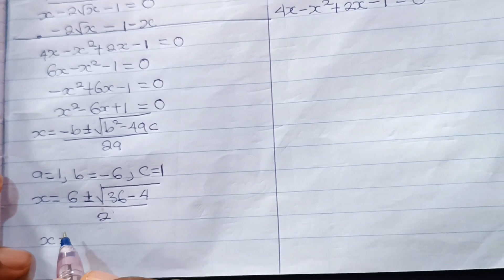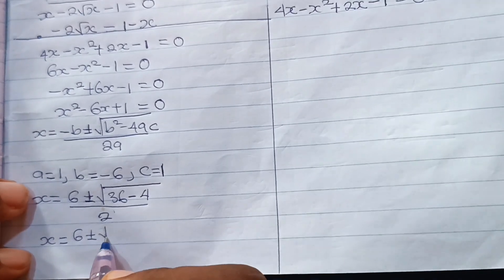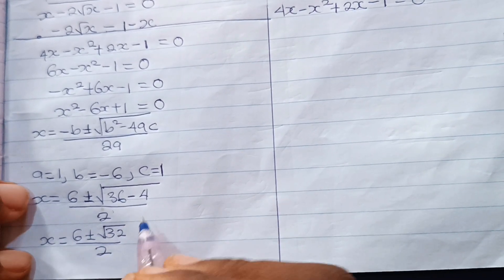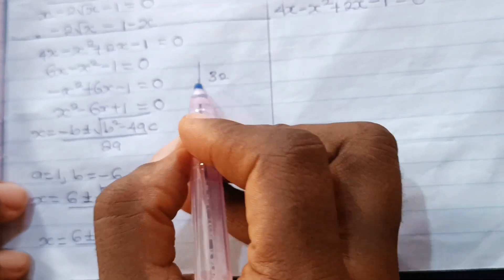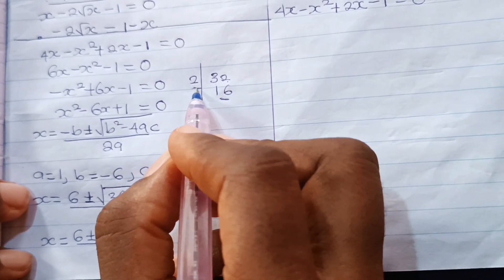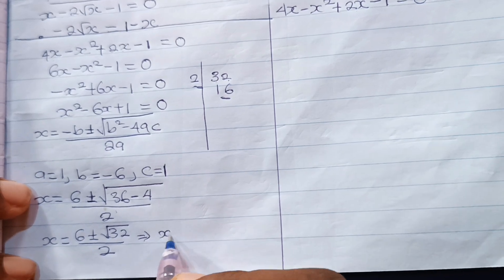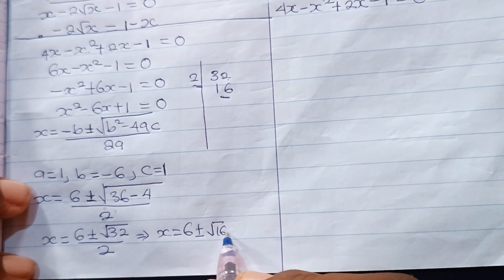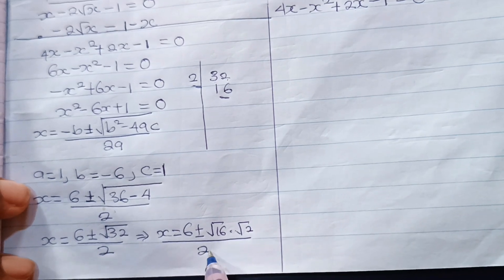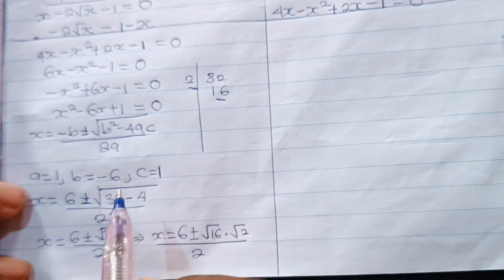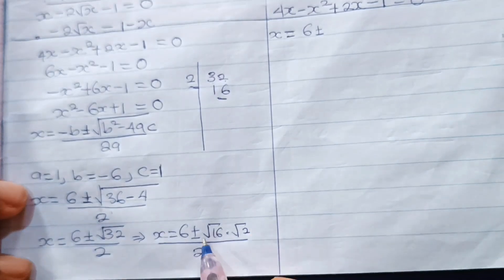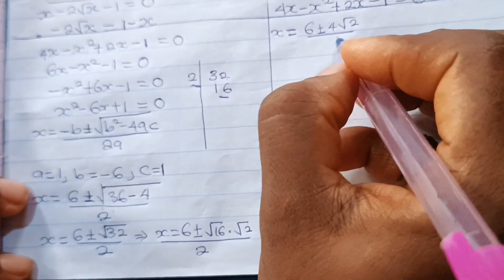So x equals 6 plus or minus square root of 32, divided by 2. Now let's simplify 32: 2 divides 32 to give us 16, so we have a perfect square. Therefore x equals 6 plus or minus square root of 16 times square root of 2, divided by 2. Square root of 16 gives us 4, so x equals 6 plus or minus 4 root 2, divided by 2.